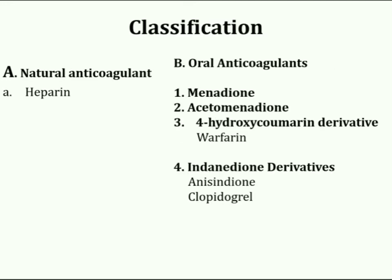Classification of anticoagulants includes two main categories: natural anticoagulants and oral anticoagulants. Heparin is a natural anticoagulant formed in the body; it occurs in the mast cells as a much bigger molecule loosely bonded to the granular protein, and is used in vivo as well as in vitro. In vivo administration involves parenteral administration. The second main category, oral anticoagulants, contains important drug candidates such as menadione, acenocoumarinol, warfarin (a 4-hydroxycoumarin derivative), and indandione derivatives such as anisindione and clopidogrel.